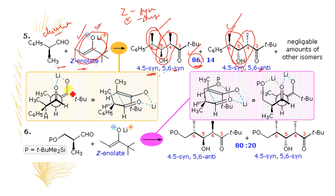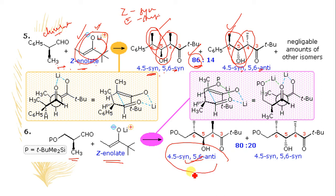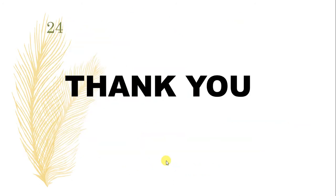You can also determine which Felkin-Anh model is followed in this reaction. In another case, there is another chiral aldehyde treated with Z enolate, where compared to syn, the stereochemical output follows a different LK-norm model to get the stereochemical outcome. Thank you.